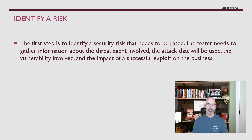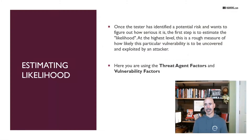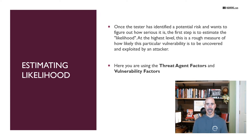The first step to identifying a risk that needs to be rated is gathering information about the threat agent involved — that's the attacker — what type of attack will be used, the vulnerability involved, and the impact of a successful exploit to the business. When estimating likelihood, there are two factors: threat agent factors and vulnerability factors. Not every vulnerability is the same for every organization — you may have a higher likelihood because you don't have the same security controls as another organization that can mitigate the risk.